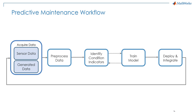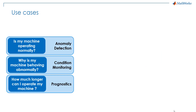Before we go on, let me briefly summarize what kinds of questions predictive maintenance can answer. The first and simplest question is: is my machine working well or not? This is what we call anomaly detection.